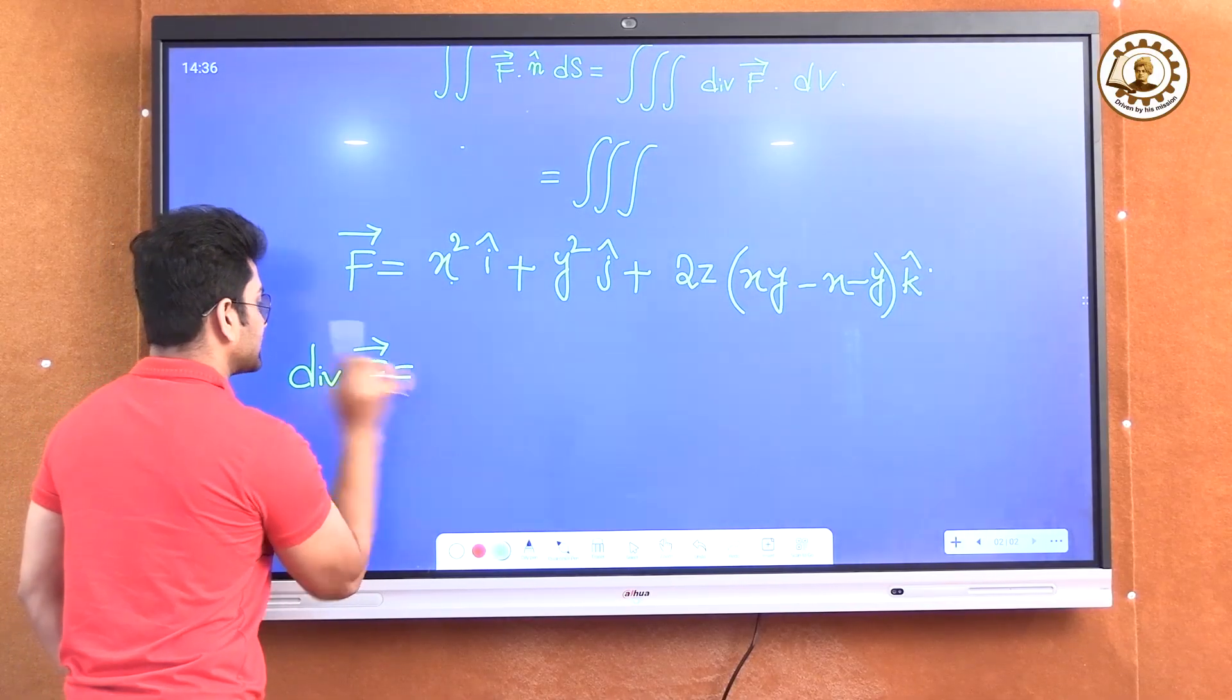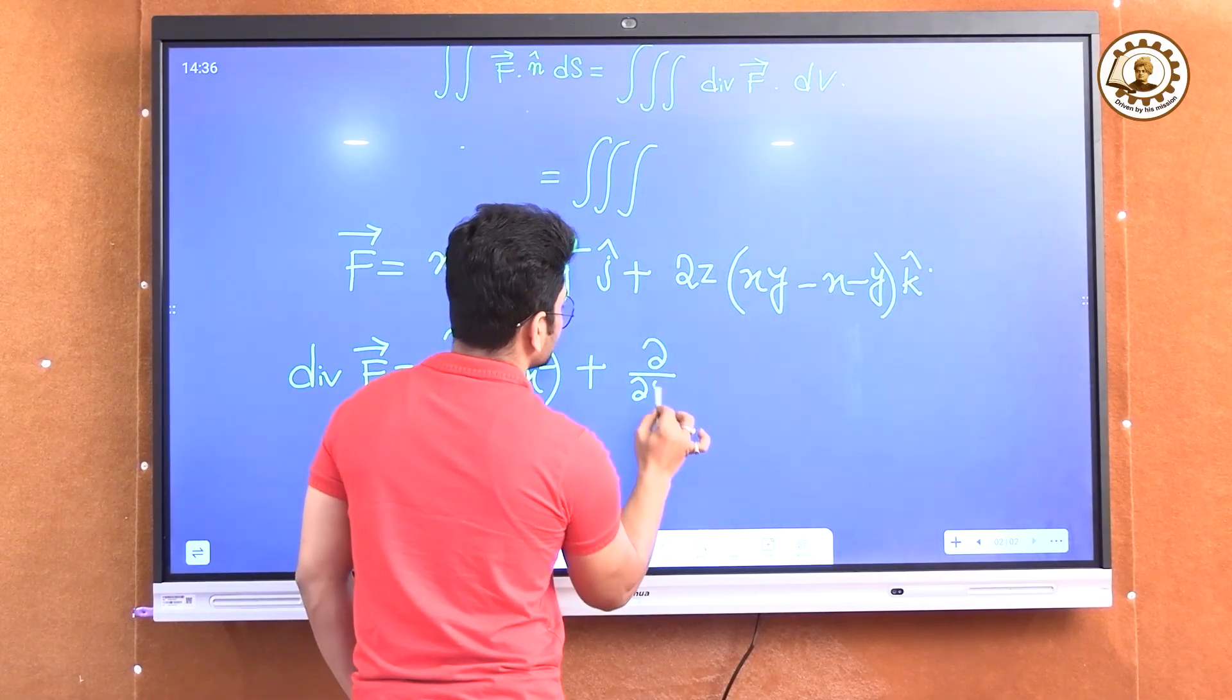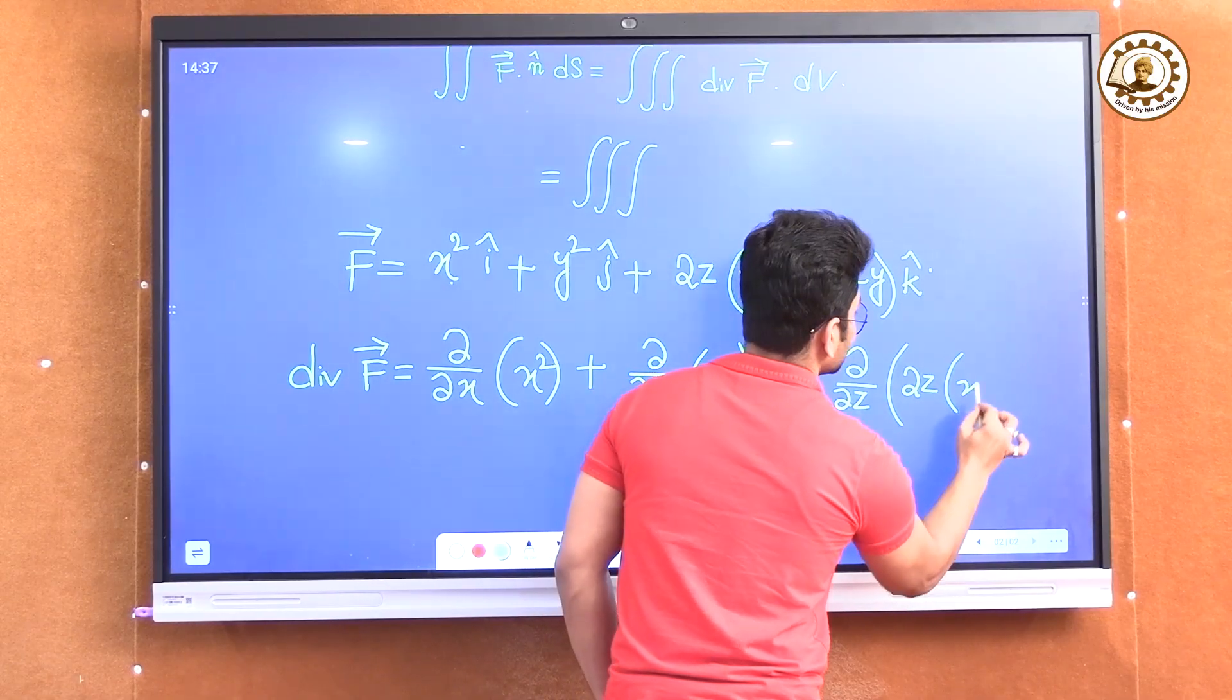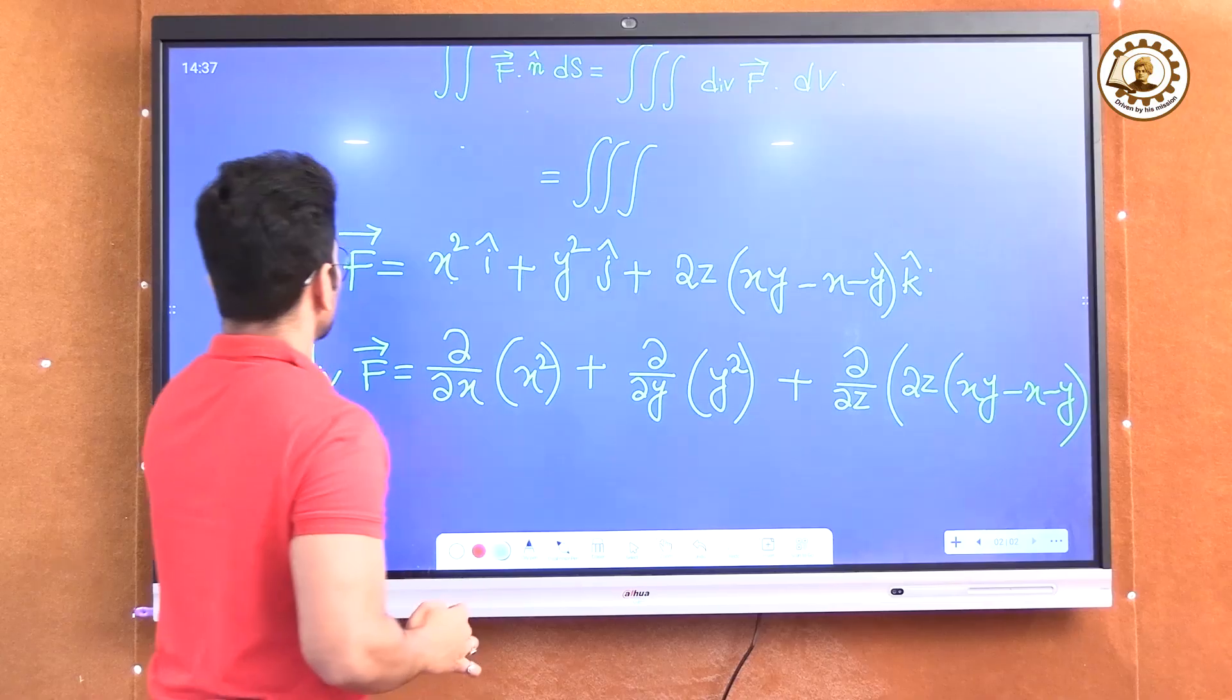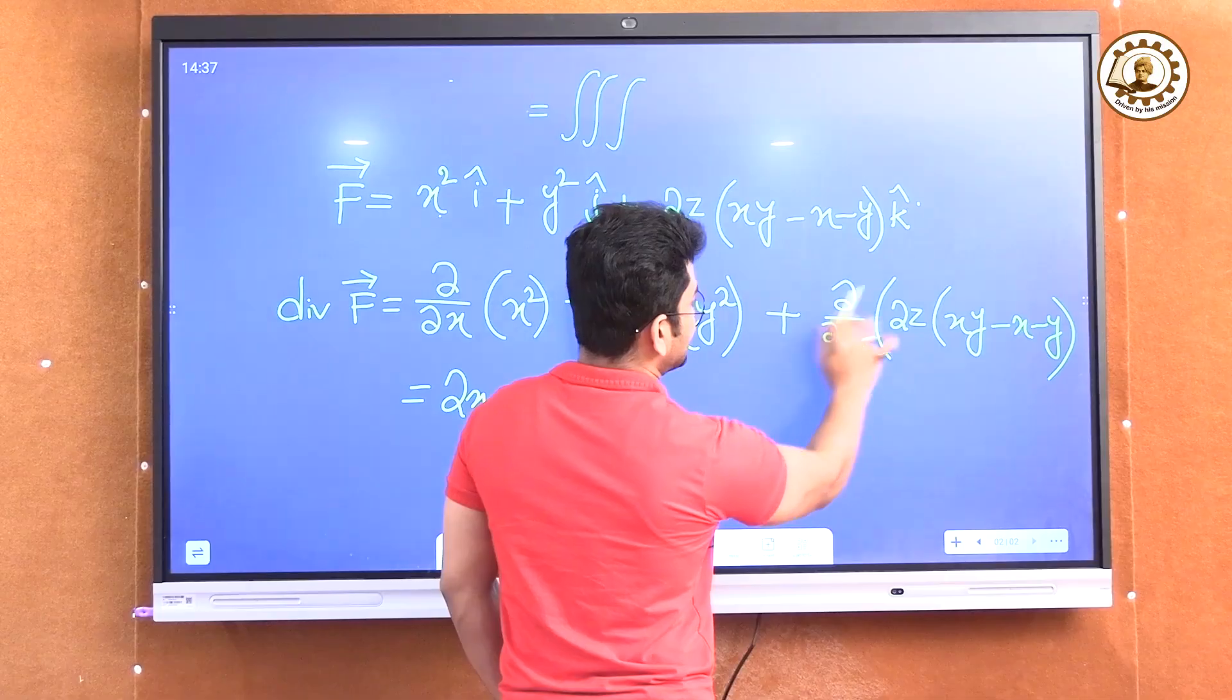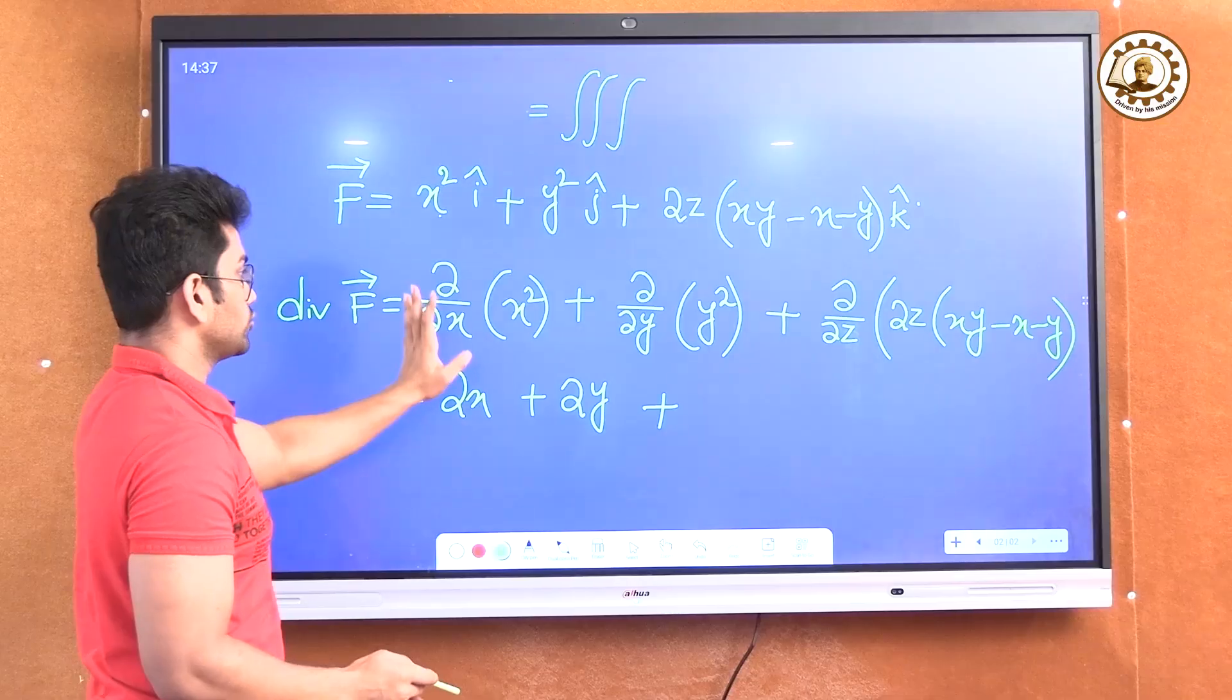Divergence of f equal to del del x of x square plus del del y of y square plus del del z of 2z into xy minus x minus y. We have differentiated y square with respect to y that means it is 2y and we have differentiated x square with respect to x that is 2x.